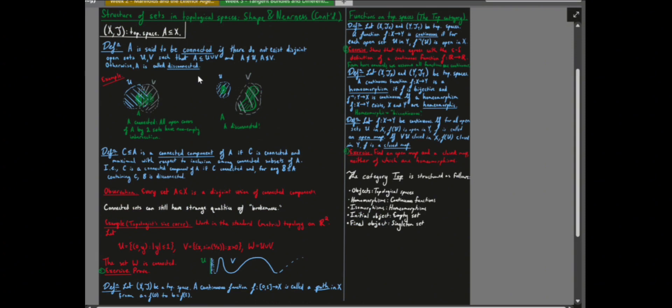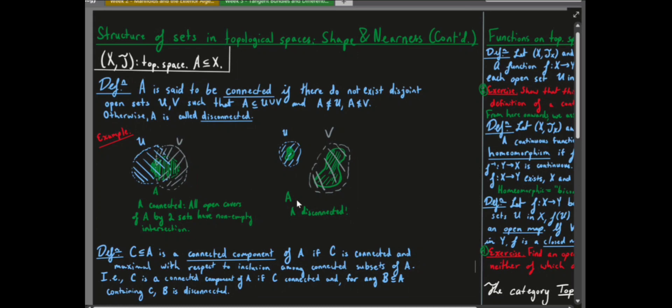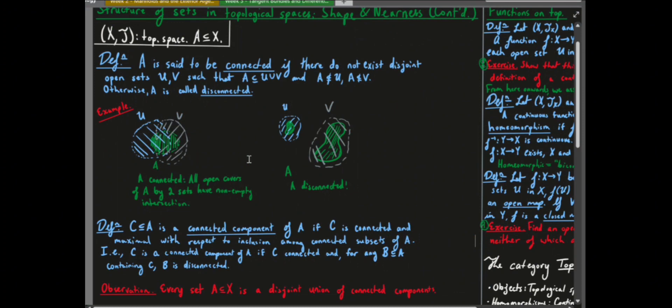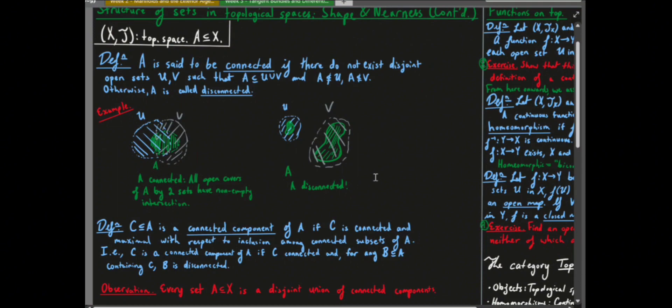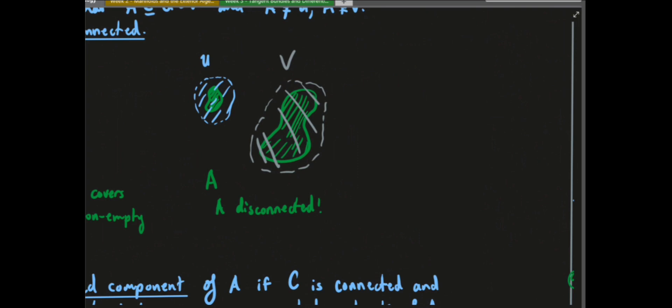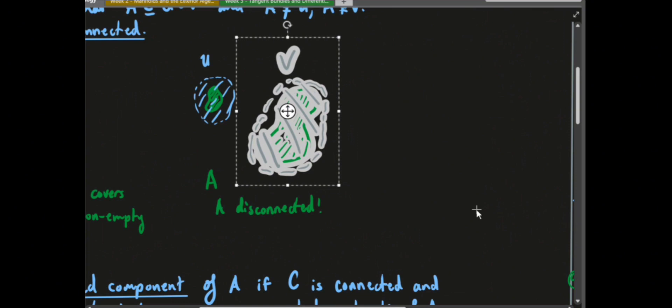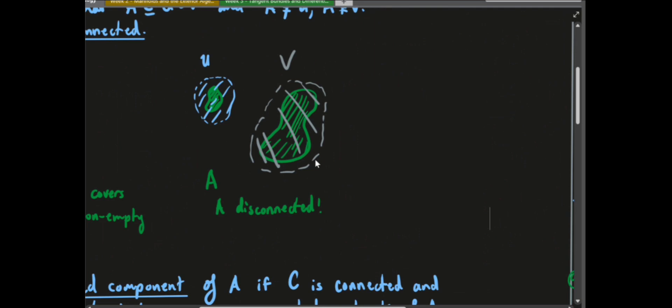We briefly talked about connectedness. The idea is to see if you can reach parts of your topological space from others. If you can wrap around a set with two disjoint open sets U and V that cover it, then that set is disconnected. If there exists such a partition into U and V, then the set is not connected. If no such partition exists, the set is connected.